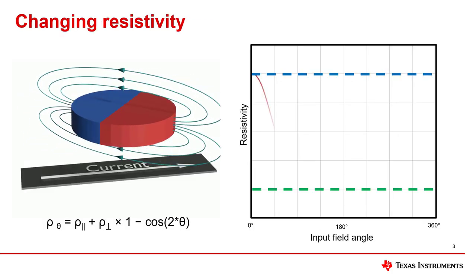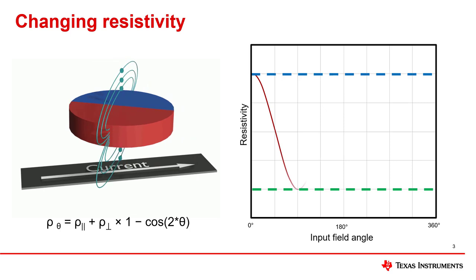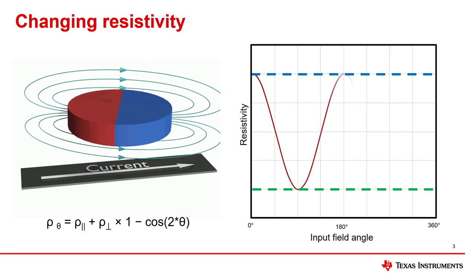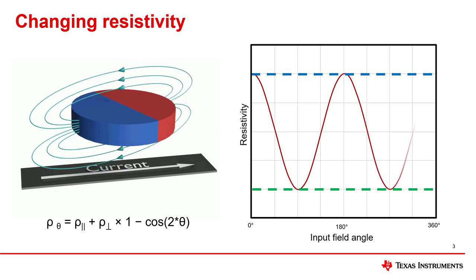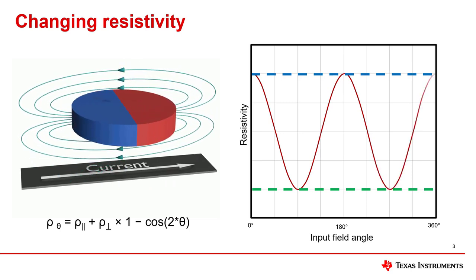With a rotating magnetic field that is greater than the saturation threshold of the material, the resistivity will oscillate twice per full revolution of the magnetic field. This is due to the resistivity of the material being unaffected when the field is parallel to the direction of the current, and then decreasing to a minimum whenever the field is perpendicular to the current. And both of these conditions are met twice per full revolution of the magnetic field.